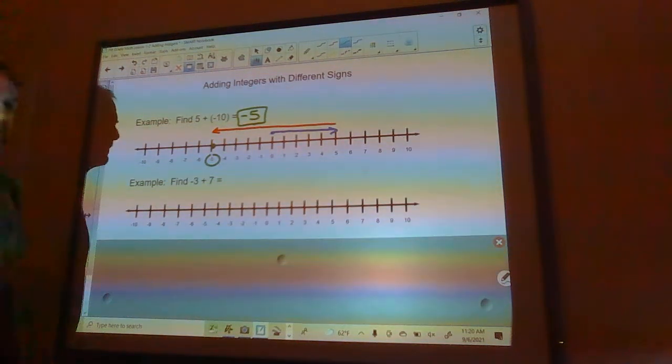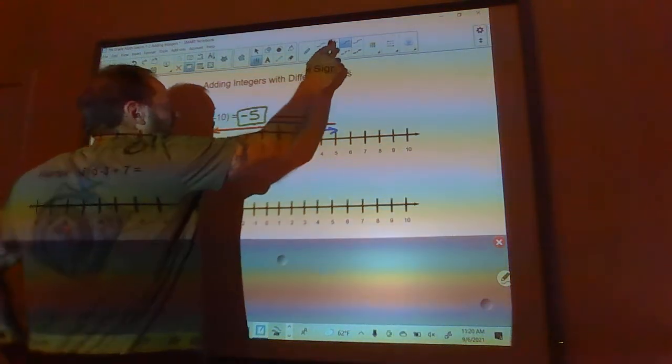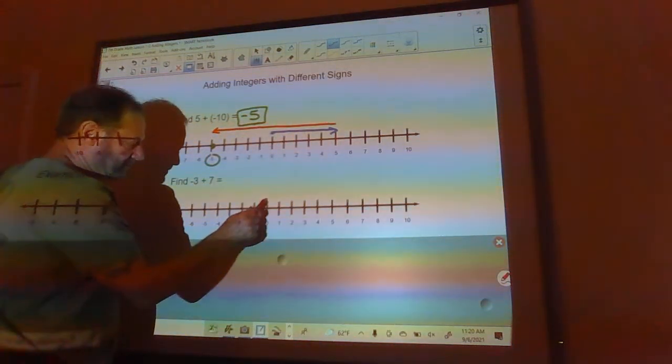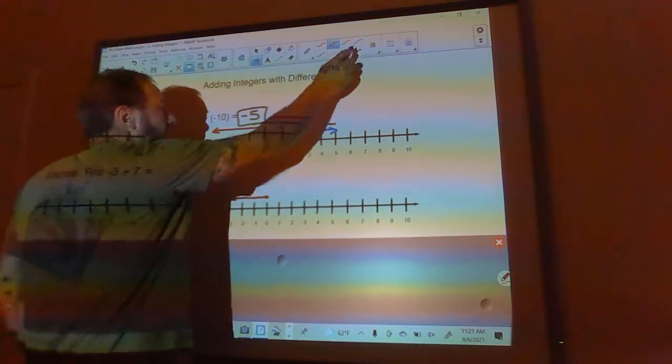Okay, you pause the video right here, do this one really quick on your number line. Negative 3 plus 7, then jump back on here and see that you did it right. Okay, negative 3, we're going to go to the left from 0: 1, 2, 3. And now we're going to go to the right 7.